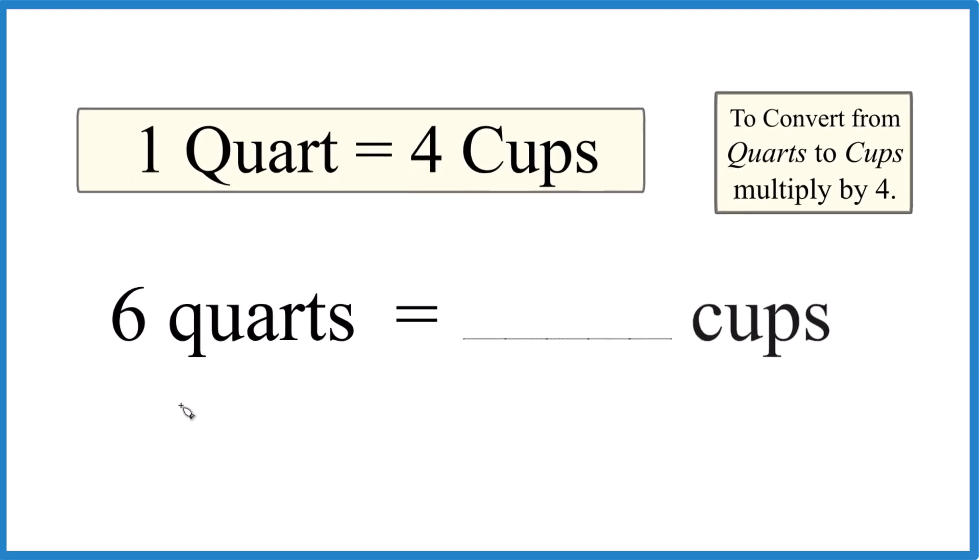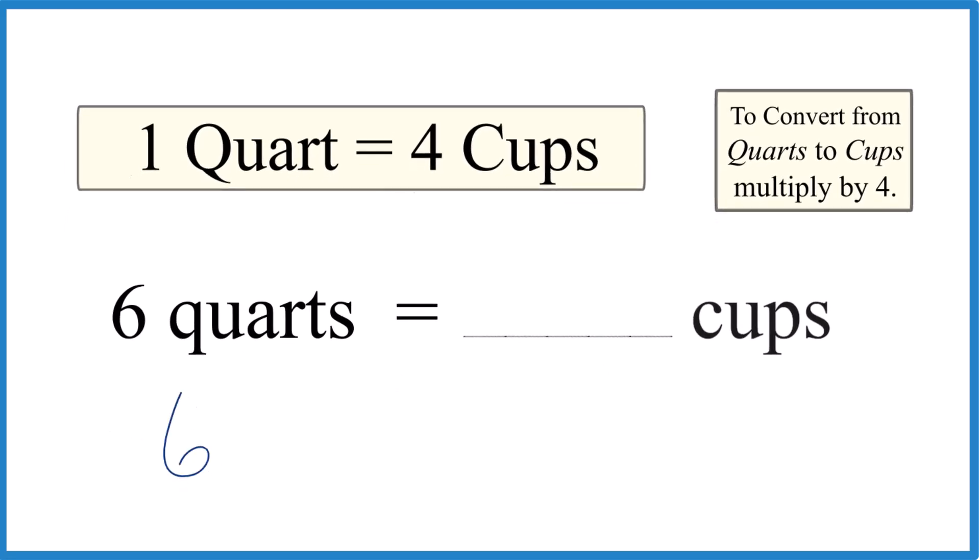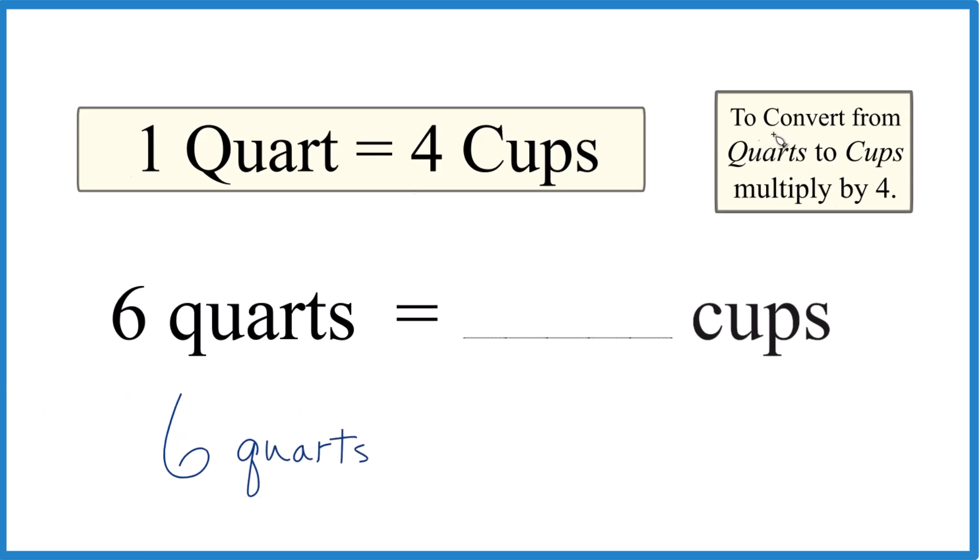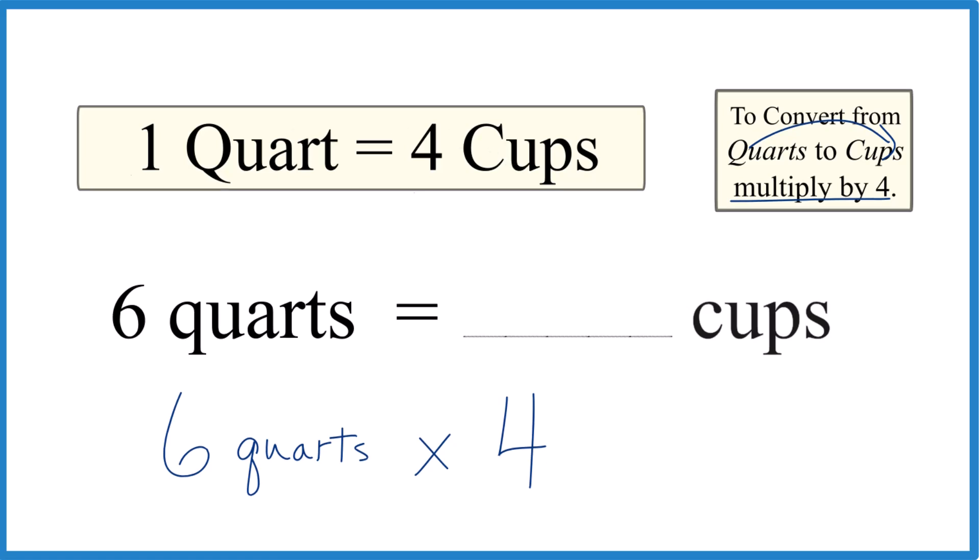Another way to do this is to say, well, I've got six of these quarts here and I'm going to take and multiply that by four. Because when we go from quarts to cups, we just multiply by four. So times four, and remember that's four cups per quart. So four cups per quart. Those are the units there.